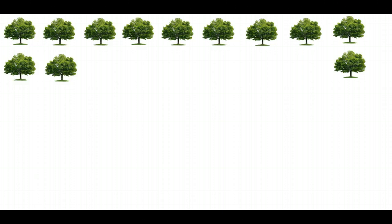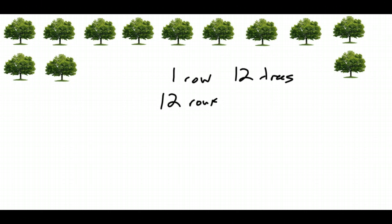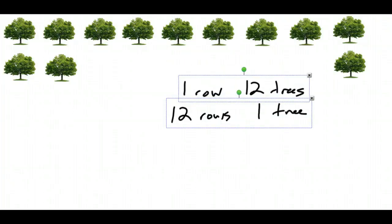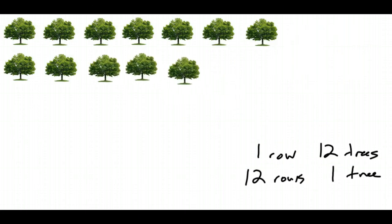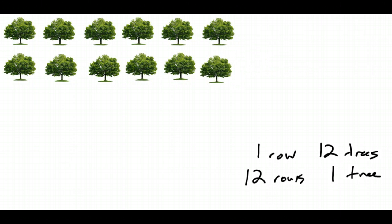There are two obvious ways to make equal rows with 12 trees: one row of 12 trees, or 12 rows of one tree each. While these are correct, they're sort of boring because we don't have multiple rows or multiple trees in each row. We can also split the trees into two rows — if we do that, each row is going to have six trees.